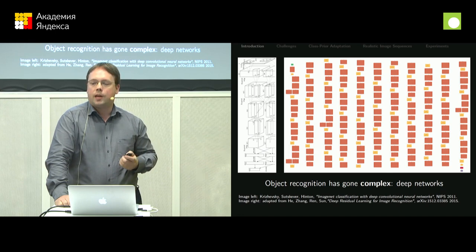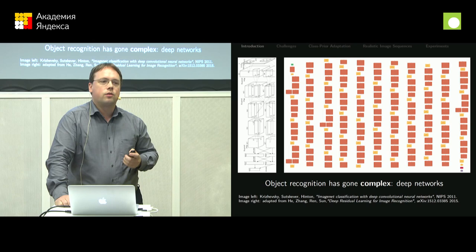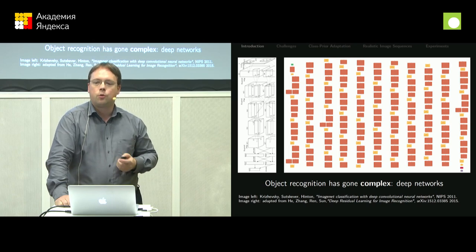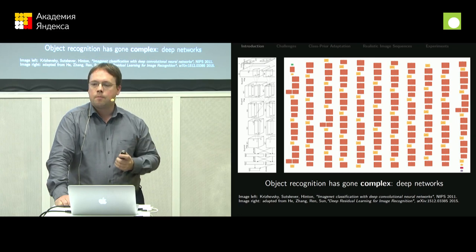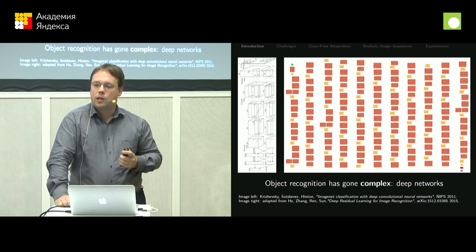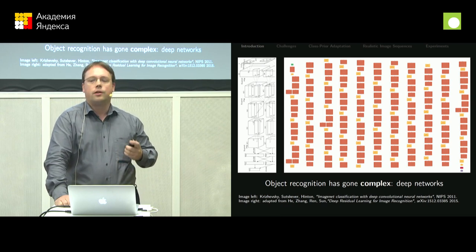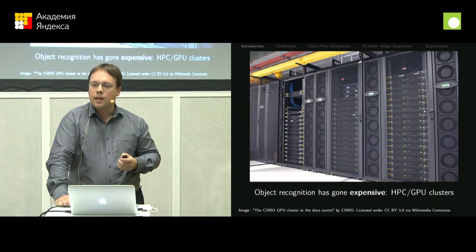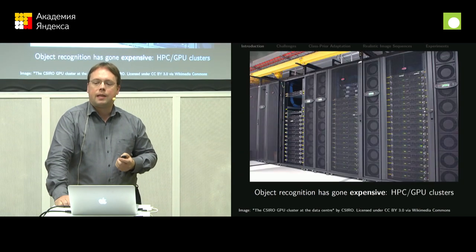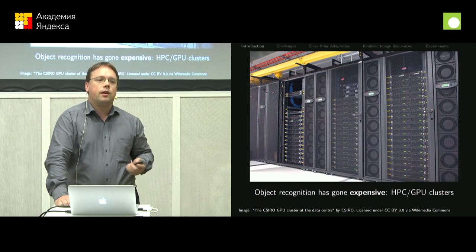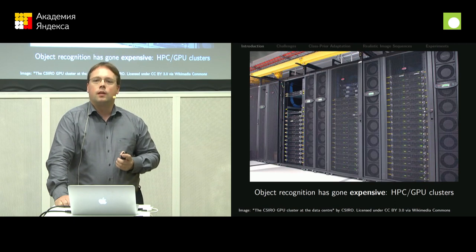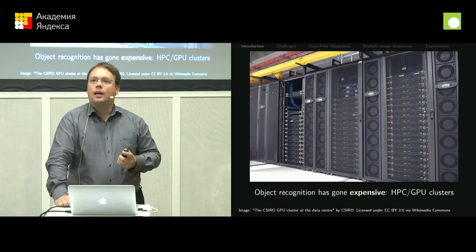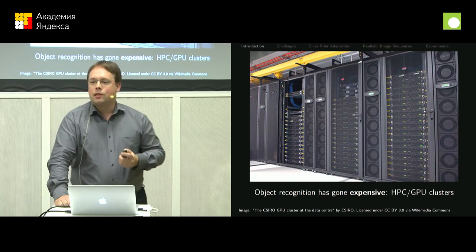At the same time the methods have become more complex. The currently best performing methods for object recognition are convolutional neural networks. On the left is one from 2011 — AlexNet — which has seven alternating linear and non-linear layers. On the right is a schematic of ResNet which has a hundred and one layers, and there's also one that has more than a thousand layers. These models have a lot of free parameters and are very complex. It has also become computationally expensive to train them — nowadays if you want to win a challenge like ImageNet you cannot do it on your laptop or even a workstation; you need a GPU cluster.